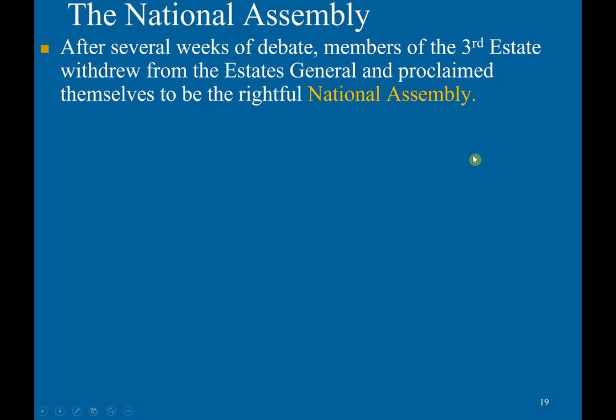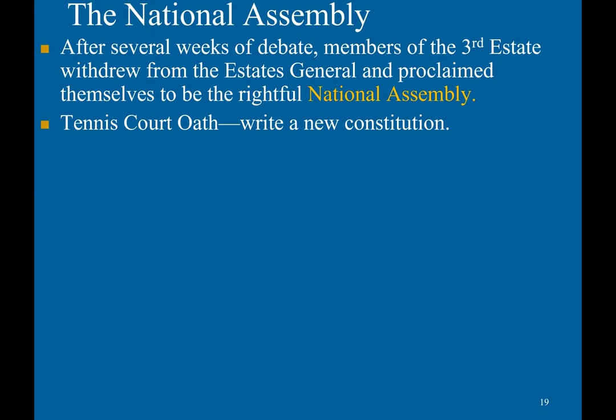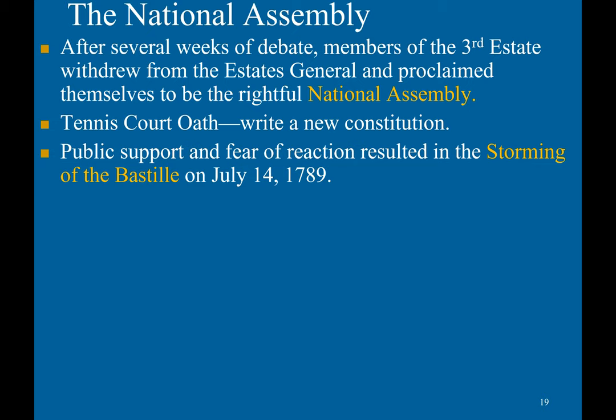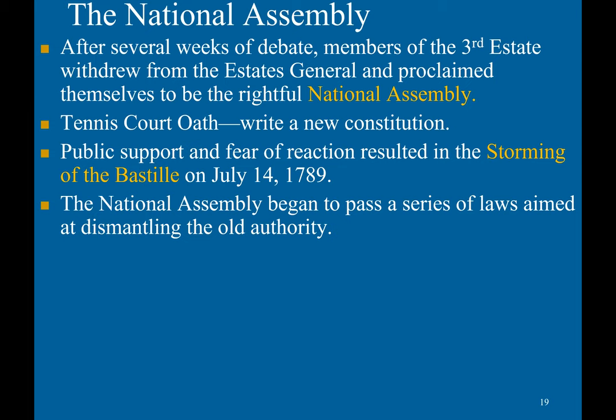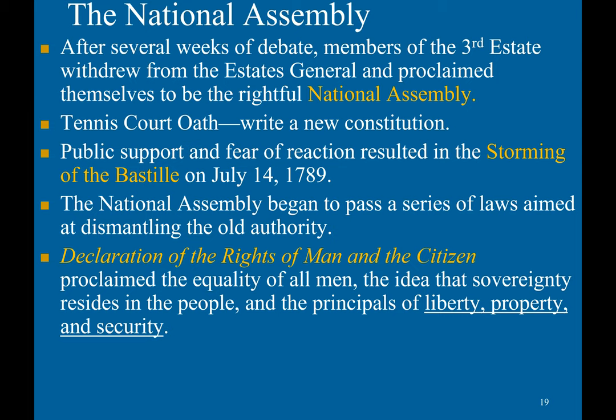After several weeks of debate, members of the third estate withdrew from the Estates General and proclaimed themselves to be the rightful National Assembly. They swore an oath — the Tennis Court Oath — pledging to write a new constitution. Public support and fear of reaction resulted in the storming of the Bastille on July 14, 1789. The National Assembly began to pass a series of laws aimed to dismantle the old authority. It also passed the Declaration of the Rights of Man and Citizen, proclaiming the equality of all men, the idea that sovereignty resides in the people, and the principles of liberty, property, and security. Its goals were liberty, equality, and fraternity.